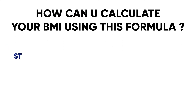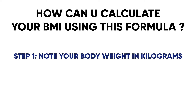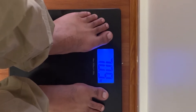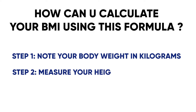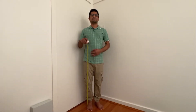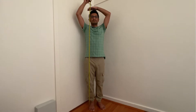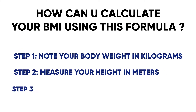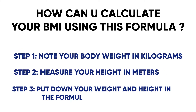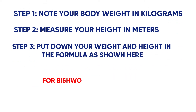So how can you calculate your BMI using this formula? Step one: note your body weight in kilograms. Here you can see that Bisho's weight is 70.9 kg. Step two: measure your height in meters. Here you can see that Bisho's height is 172 centimeters, which is equal to 1.72 meters. Step three: put down your weight and height in the formula. So for Bisho, BMI is 70.9 divided by 1.72 squared, which equals 24.